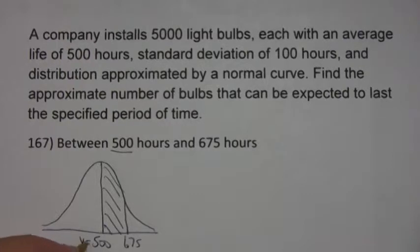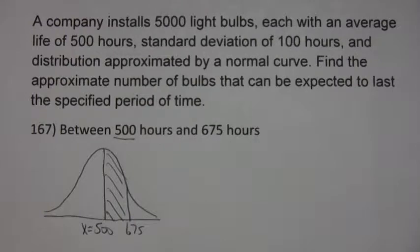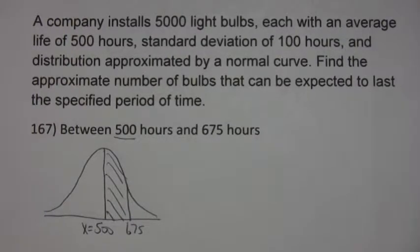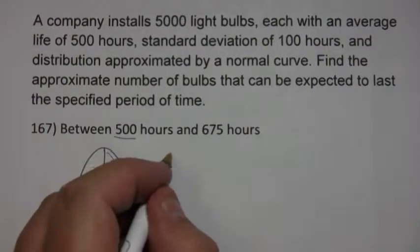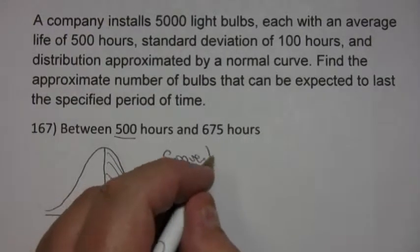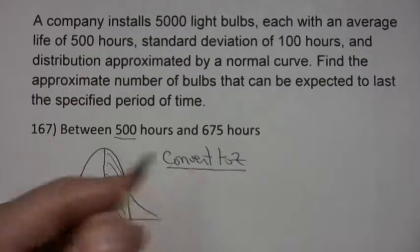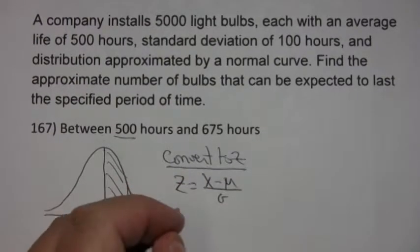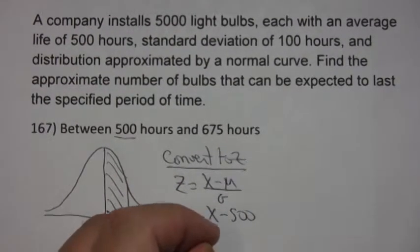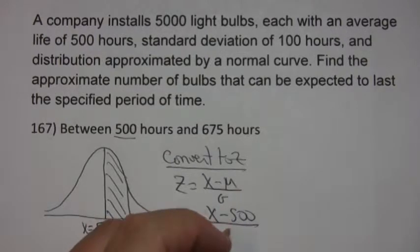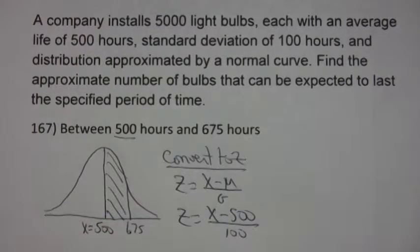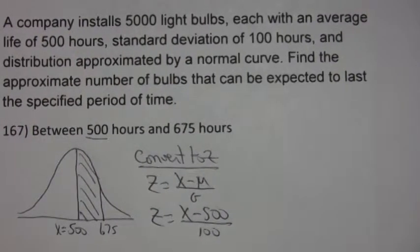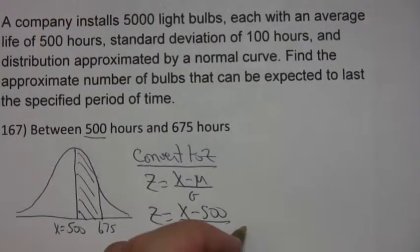Now remember, these are x values because the z values are standard normal. So what you have to do is convert them by using z equals x minus mu over sigma. And as we've done before, mu is 500 and sigma is 100. Now when we finish converting, we'll end up with a standard normal distribution.